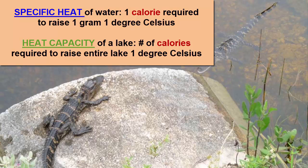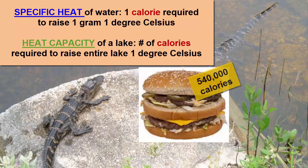The unit used to measure heat is a calorie. We all know about calories in the food we eat, but those calories are actually kilocalories, or 1,000 calories. A Big Mac, for example, has 540,000 calories.